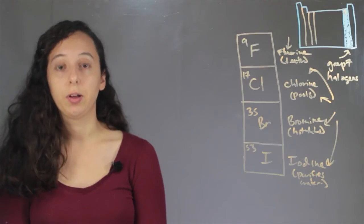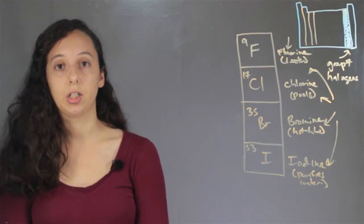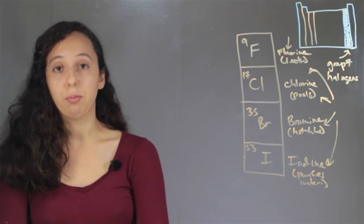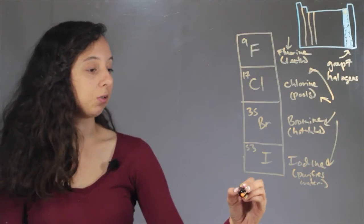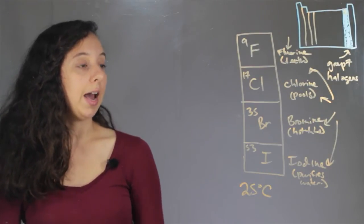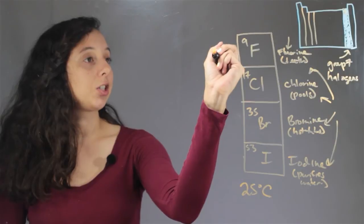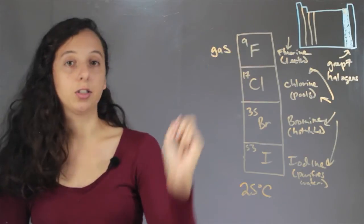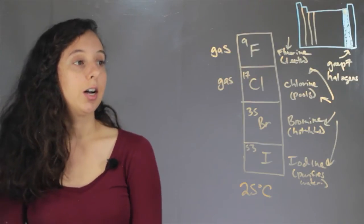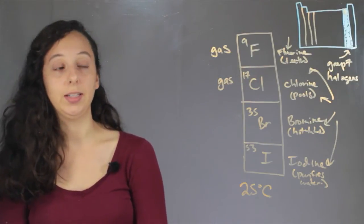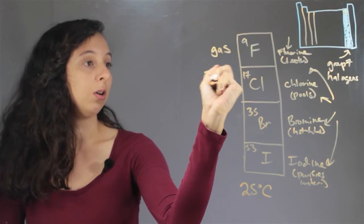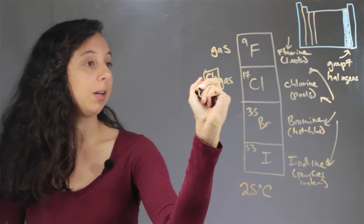The next thing we're going to look at is whether or not they're solid. Let's consider room temperature — just the temperature that's on Earth most of the time for most people, usually defined as 25 degrees Celsius. Fluorine at room temperature is actually a gas; it's light enough it can still float around. And so is chlorine. Unfun fact: chlorine gas is poisonous and will definitely kill you, and people used it to kill each other in World War I.